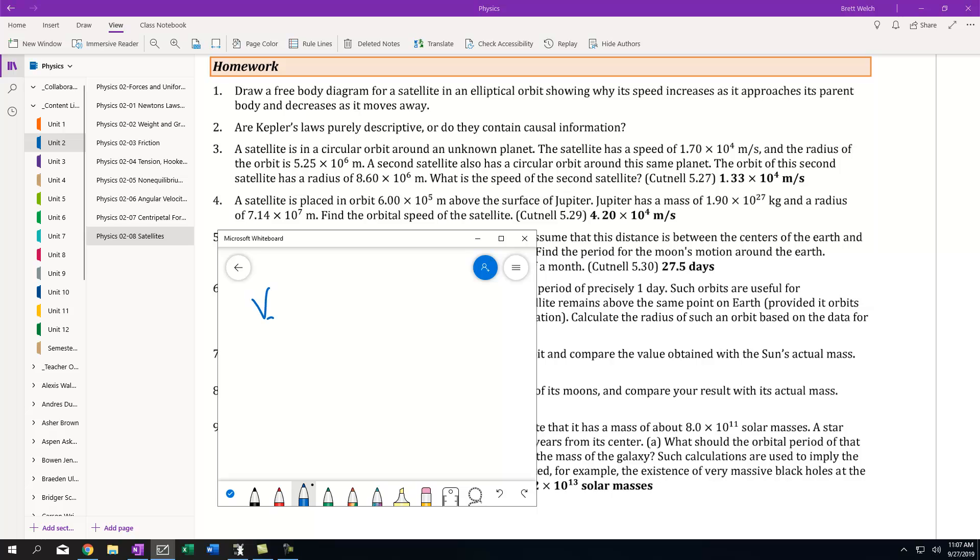that's just our V satellite, the velocity of the satellite, is always the square root of universal gravitational constant times the mass of the planet, in this case Jupiter, over the radius of orbit.